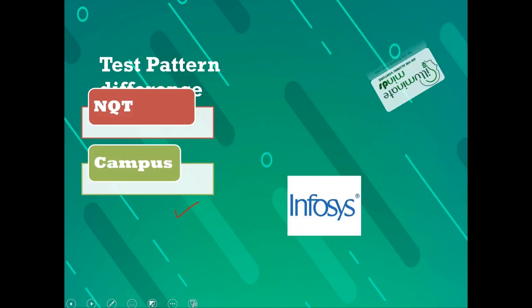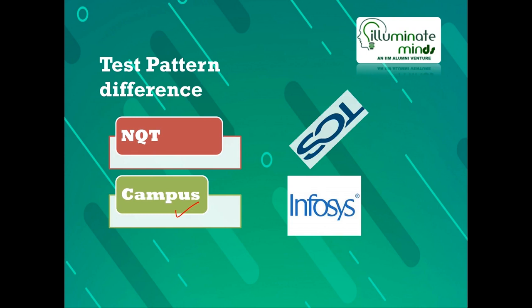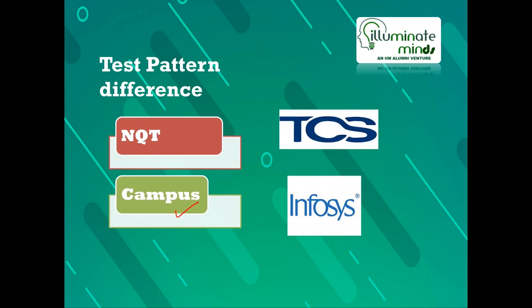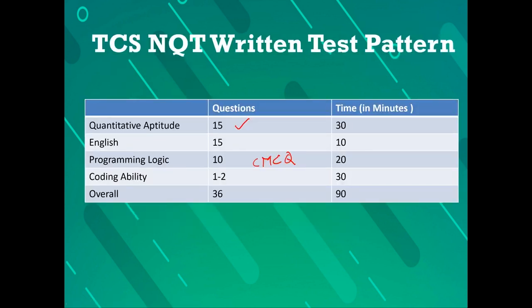Next is the test pattern difference, which is the most important point of discussion. TCS conducts its national qualifying test — an international-level examination — while Infosys conducts it through a campus recruitment test, where Infosys comes to the campus, makes students write its test, followed by an interview. The TCS NQT has four sections: quantitative aptitude, verbal reasoning, programming logic (also known as the CMCQ section), and coding ability.